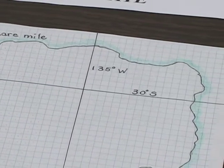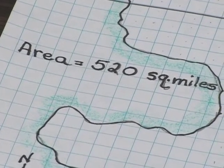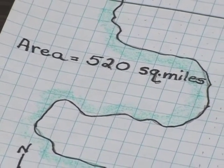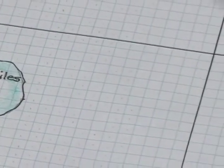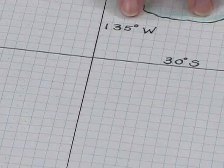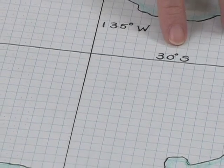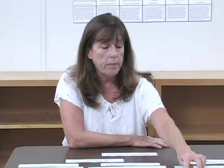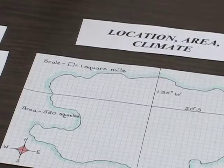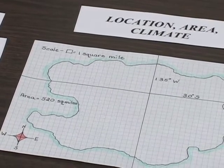They fill in the total area of their island. Then they need to look on the globe and find a location for their island — they can't put it on top of another landmass, so they have to find an open place. They draw in their line of latitude and their line of longitude and label it with the degrees. Mine is 135 degrees west by 30 degrees south of the equator. Then have them add in a little compass rose.